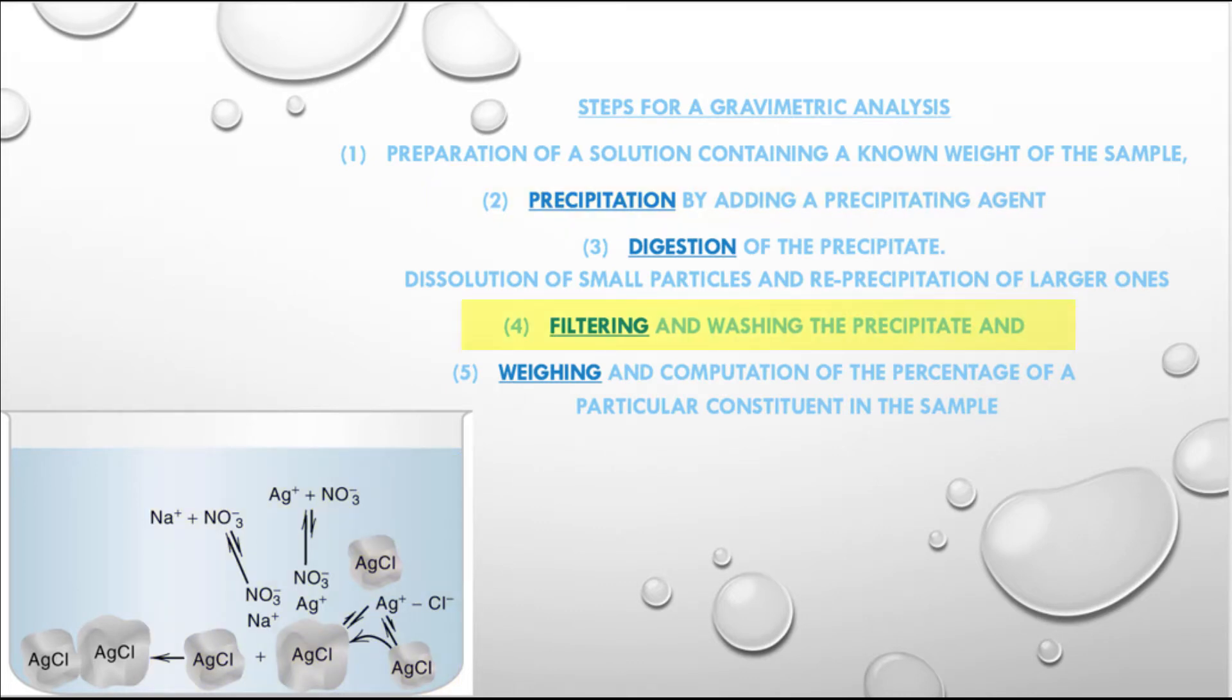then separating the resulting silver chloride solid by filtration. Careful measurement of the mass of the product will be used to calculate the original mass of chloride in your sample.